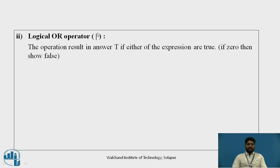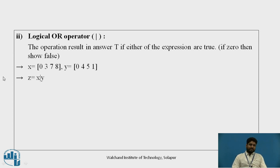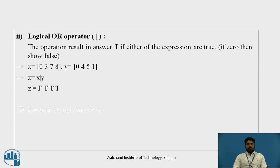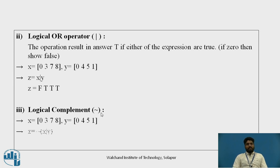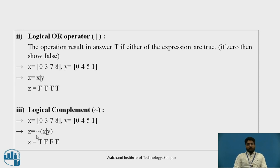For the logical OR operator, we use the | (pipe/dash) sign. With X and Y defined, X | Y gives F, T, T, T. Similarly, the logical complement operator produces the opposite result of OR. These are the three logical operators: AND, OR, and complement.